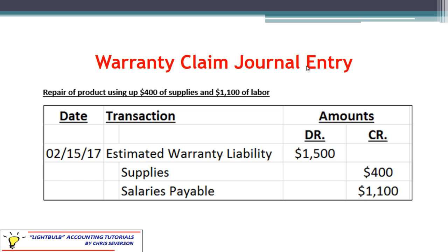Another potential claim would be where they use up some supplies or parts and then use labor to fix the product. In this case, they're using $400 of parts and $1,100 of labor. We would still debit estimated warranty liability for $1,500, but credit supplies for $400 to reduce it, and credit salaries payable for $1,100 because we're setting up a liability for amounts owed to employees. This could also be a credit to cash if we're paying those employees right away, but the general rule is to set up salaries payable.